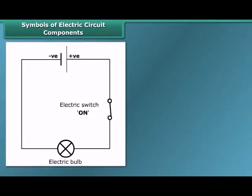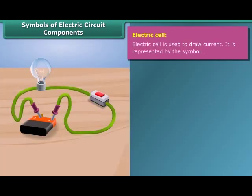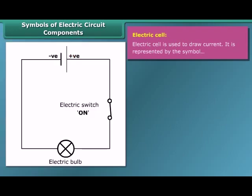An electric cell is a simple device which is used to generate electricity. Electricity is produced by chemical reaction. It has a positive terminal and a negative terminal. In the symbol of the electric cell, the longer line represents the positive terminal, and the thicker, shorter line represents the negative terminal.